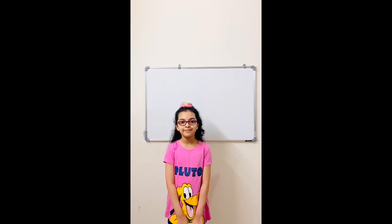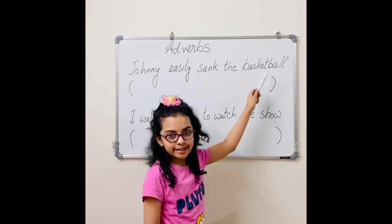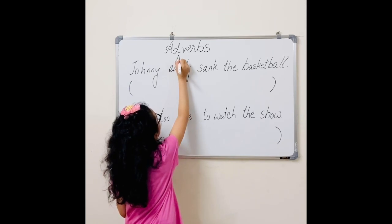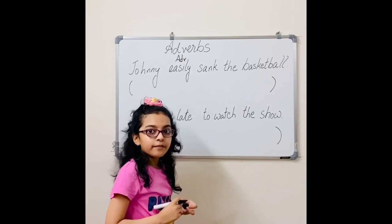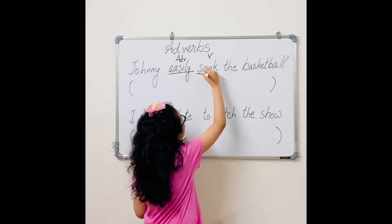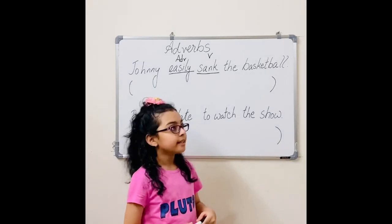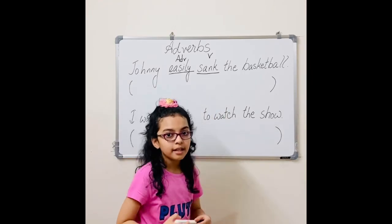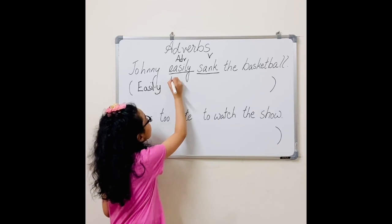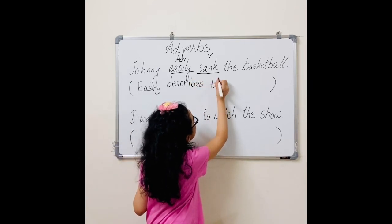Now I'm going to tell you a few examples. Let's start with the first one: Johnny easily sank the basketball. Here, easily is the adverb and the verb here is sank. How did he sink the basketball? Easily. So easily describes the verb sank.